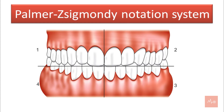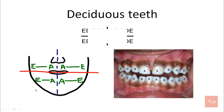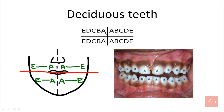Let's start with the Palmer-Zsygmondy notation system. Now these are the two jaws, the upper and the lower jaw, and are divided into four quadrants: one, two, three and four. The deciduous teeth are represented by alphabets. Every quadrant starts from A and ends at E. A is central incisor, B is lateral incisor, C is canine, D is first molar and E is second molar. So total there are 20 teeth.